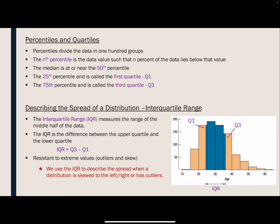To talk about the interquartile range, we first need to discuss quartiles and percentiles. A percentile is the percentage of data values below that value. For example, my two-year-old is in the 97th percentile for height, meaning she is taller than 97% of other two-year-olds. Since 50% of data values are below the median, we say the 50th percentile is the median. The 25th percentile is called the first quartile, or Q1, and the 75th percentile is called the third quartile, or Q3.